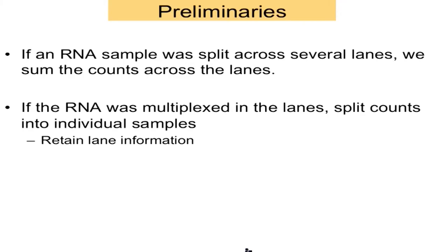So we have the expression matrix. In the old days, to get enough reads, we sometimes ran multiple lanes for the same sample. You're probably not going to do that these days unless you're looking at very small regions of the transcriptome. What we're going to do these days is have multiplexed samples that need to be split into individual samples. You might want to retain the lane information to make sure there are no lane batch effects.